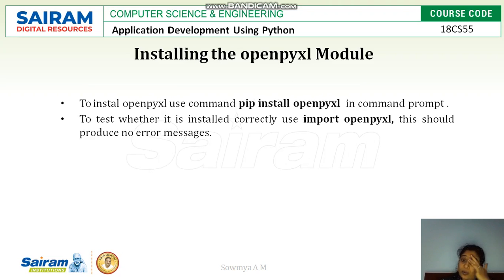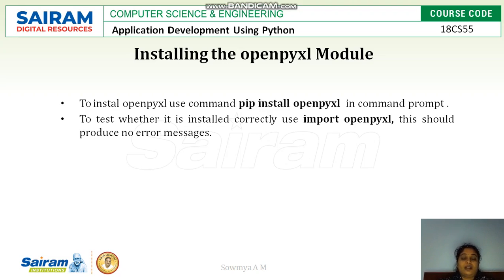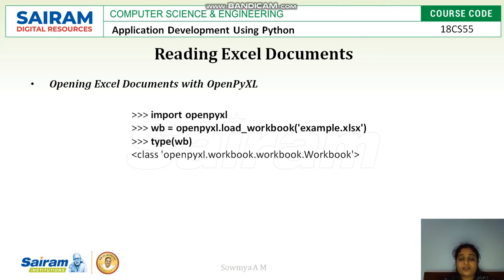Next, installing the openpyxl module. Openpyxl is a module used for accessing, editing, or doing anything to an Excel sheet with the help of Python code. To install openpyxl, use 'pip install openpyxl' in the command prompt. To verify it is installed, in the IDLE window just enter 'import openpyxl' — if there are no errors, it is installed successfully.